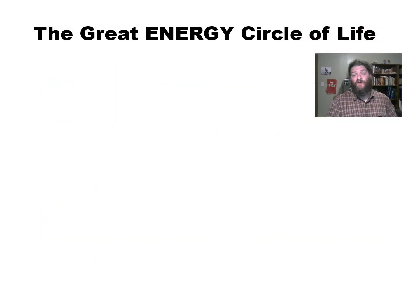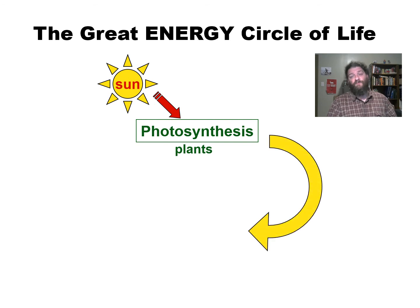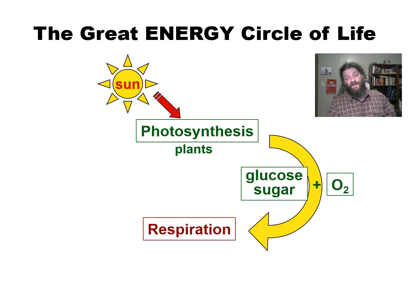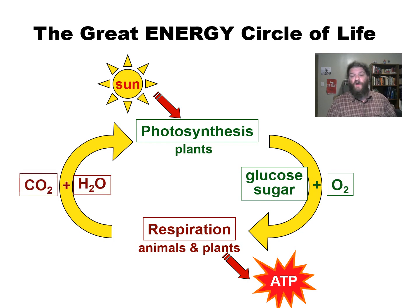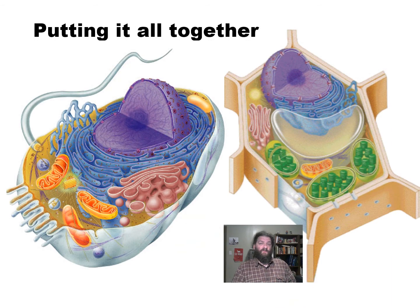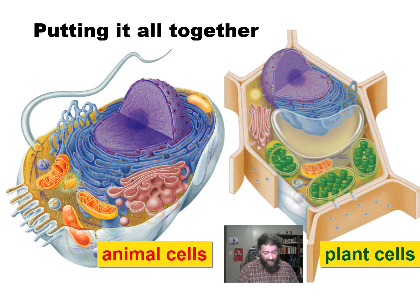This naturally leads us to what some call the great energy circle of life — I just call it the carbon-oxygen cycle — where the sun's energy through photosynthesis in plants is converted into ATP, glucose, sugar, and oxygen. That glucose and sugar, in the presence of oxygen, is converted through aerobic cellular respiration into ATP, as well as carbon dioxide and water, which then goes back into the process of photosynthesis and around and around it goes. Though we think of animal cells, plant cells, protist cells, fungus cells, and bacterial cells as capable of independent life, they really aren't — we are completely dependent upon all of the other cells around us.